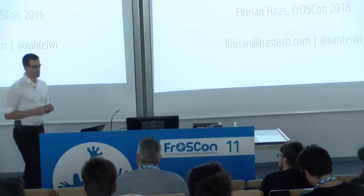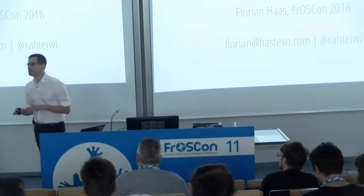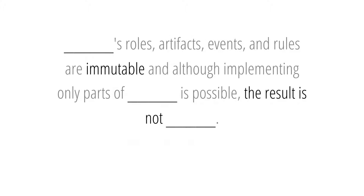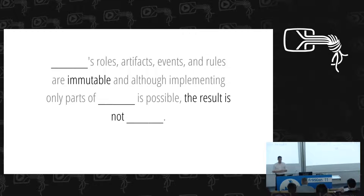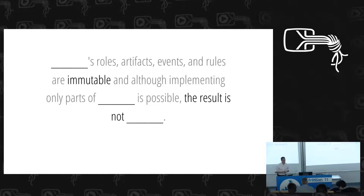If you were to read the definition of something, let's call it X. For that X there are certain roles, artifacts, events, and rules that have been defined somewhere. And these roles, artifacts, events, and rules are immutable. And although implementing only parts of X is possible, the result is not X.